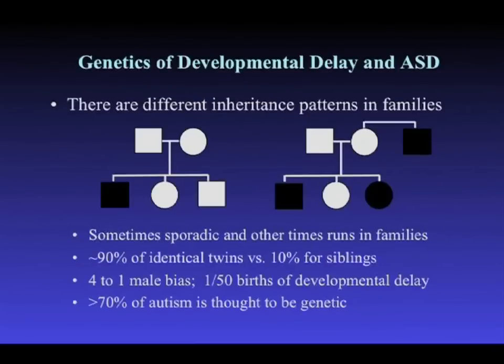I'm going to talk about the genetics of developmental delay and autism — I will not be talking about environmental influences. My background is in genetics and this is how I think about the disease. An important point: geneticists and human geneticists for a long time have thought about what we call simplex versus multiplex families.